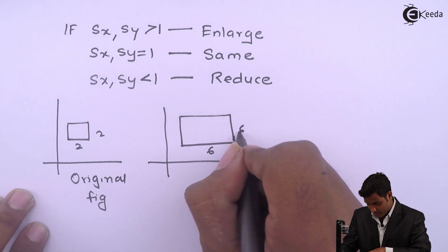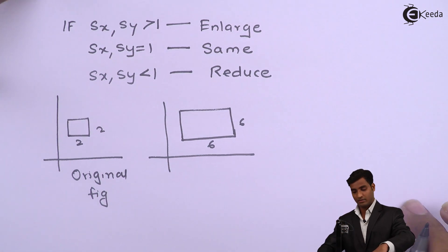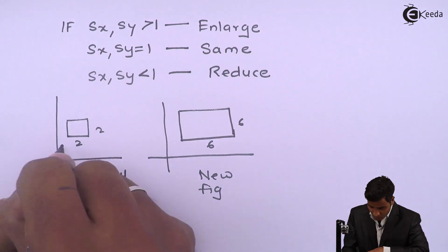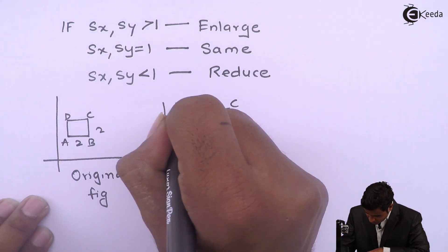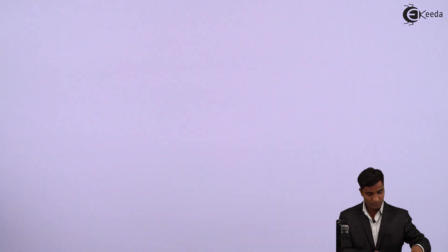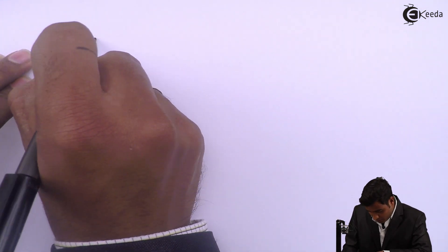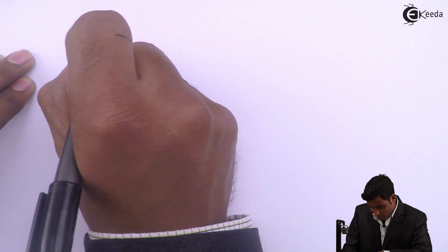And new figure dimension is 6 by 6. Since it is square sides are equal. The formula for Sx is new figure in x direction upon original figure in x direction.